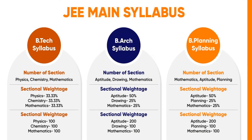JEE Main B.Tech syllabus is based on Physics, Chemistry, and Mathematics, carrying a weightage of 33.33 percent each. The topics in the syllabus are from Class 11th and 12th NCERT or CBSE. JEE Main B.Architecture syllabus is based on topics from Aptitude, Mathematics, and Drawing, with weightage of 50 percent in Aptitude, 25 percent in Drawing, and 25 percent in Mathematics. JEE Main B.Planning syllabus is based on topics from Aptitude, Mathematics, and Planning. The Mathematics syllabus is the same for all three papers, and the Aptitude syllabus is the same for B.Architecture and B.Planning papers.